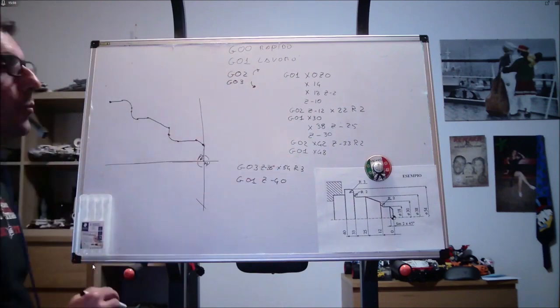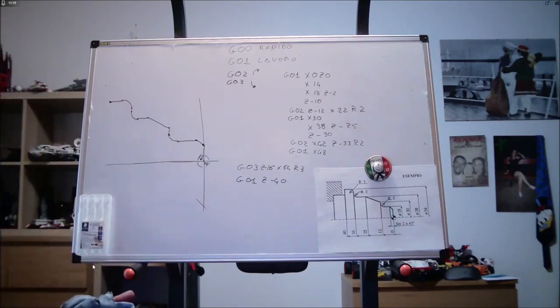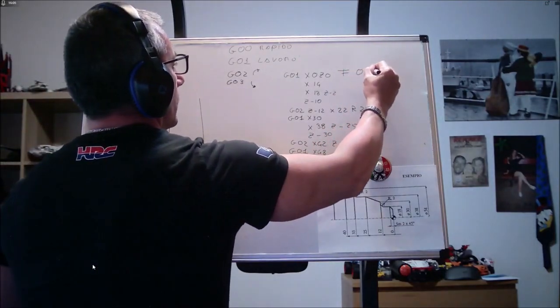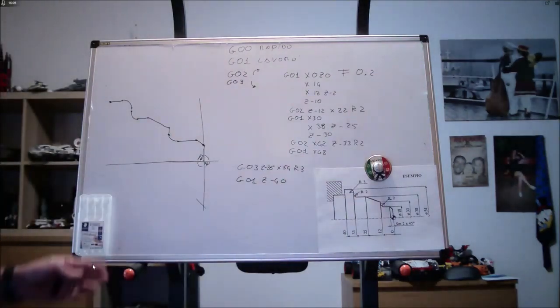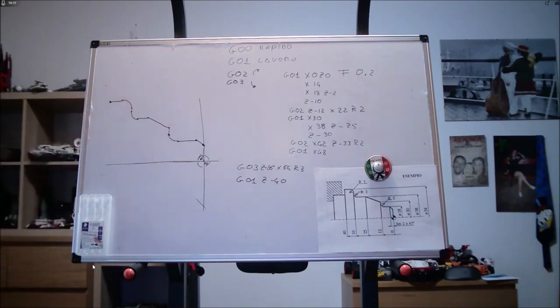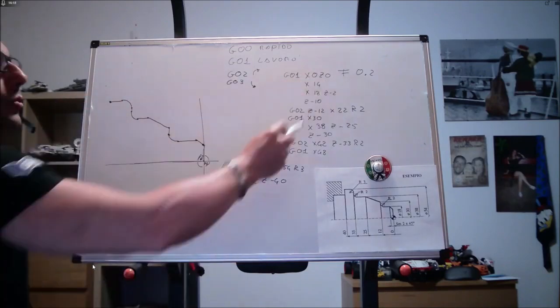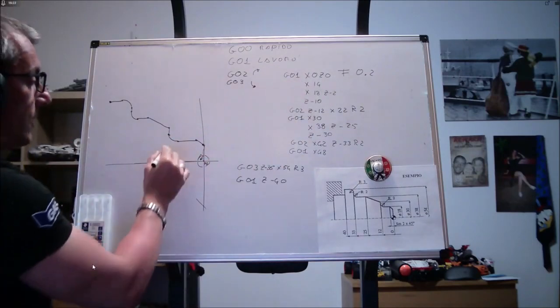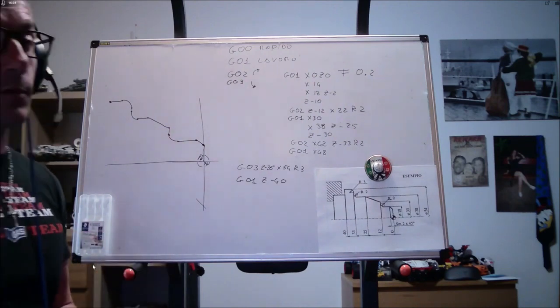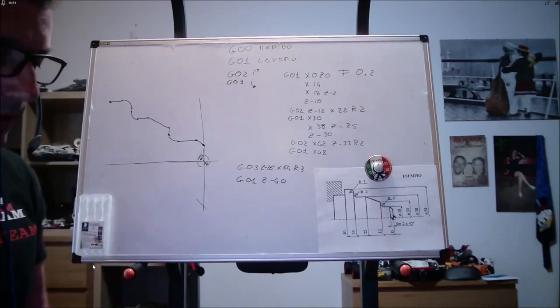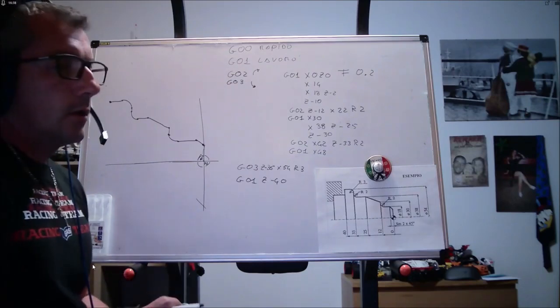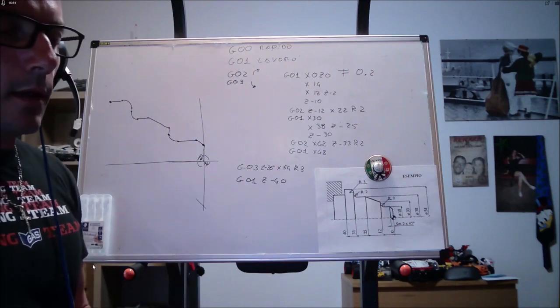Ovviamente, quando poi noi andremo a lavorare, dovremo far coincidere tutto questo con le funzioni preparatorie e la f, tipo 0.2, due decime al giro. Cioè, dovremmo andare a dire alla macchina con che f percorrere il nostro percorso. F che può essere variata di blocco in blocco. Io ogni blocco posso inserire una f diversa. Per esempio, quando faccio il raggio, normalmente tendo a rallentarla. Quando faccio gli smussi, se ho uno smusso 1x45, sto lavorando con un inserto raggio 1.6, non potrò andare a 4 decimi al giro, perché mi verrà una schifezza. Dovrò rallentare un attimino.